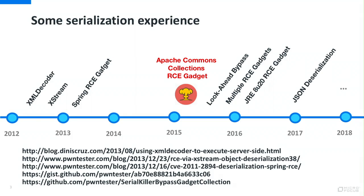I started not in 2015 as Jim said, but actually in 2012, playing with XML decoder and XStream trying to get remote code execution in RESTful web services. We were able to get remote code execution in some libraries like RESTlet and RESTc, and then I moved into the binary format of Java deserialization. I found, to my knowledge, the first remote code execution gadget for Java deserialization binary format back in 2013.